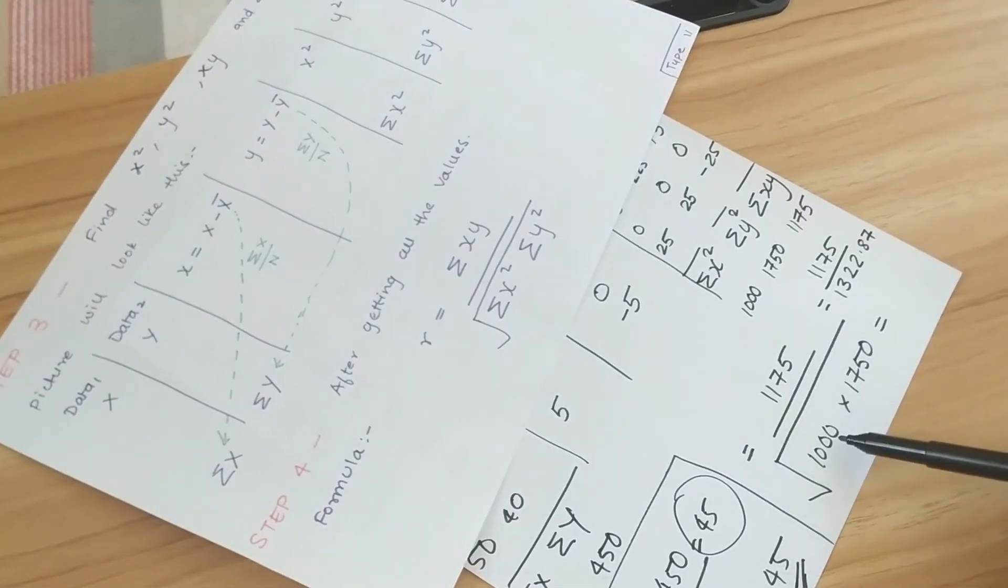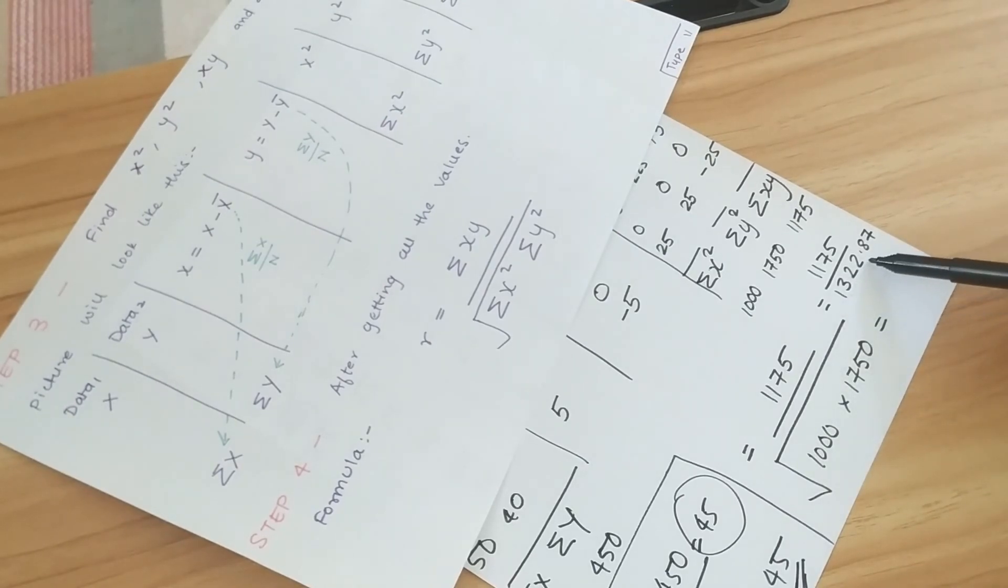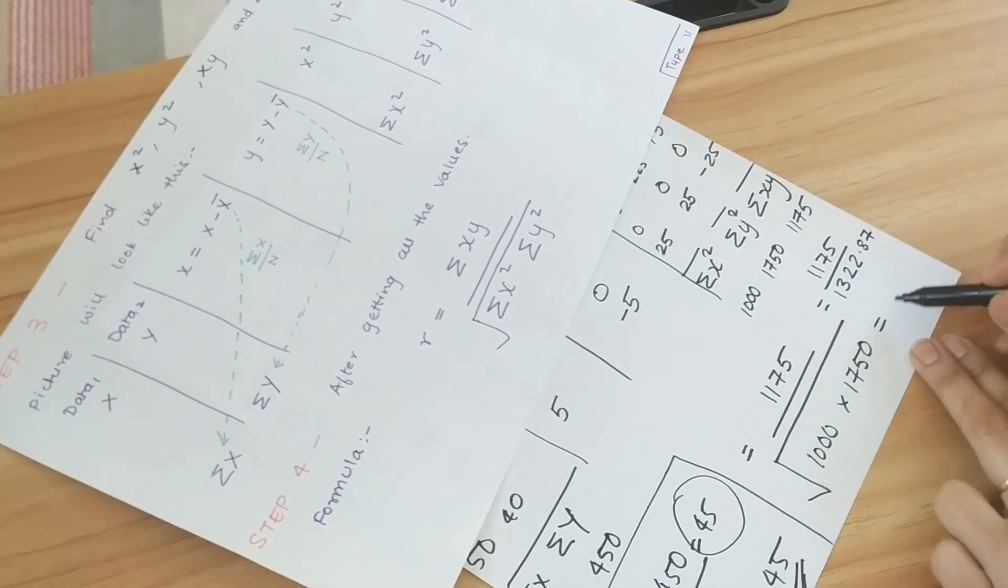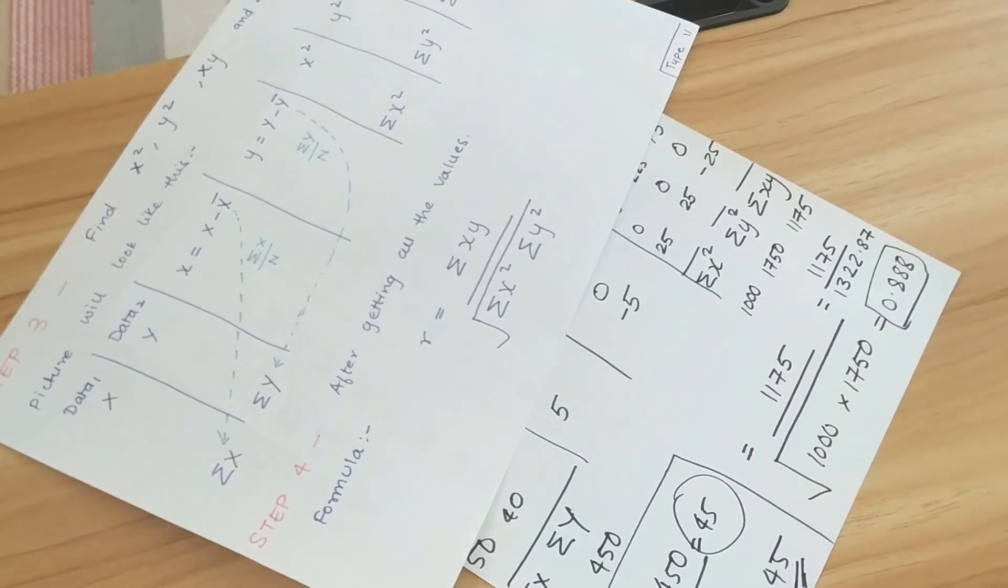So when we find the square root of this we get the value 1322.87 and then we divide we get 0.888. This is your Pearson's coefficient.